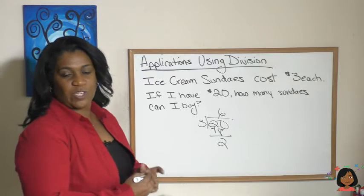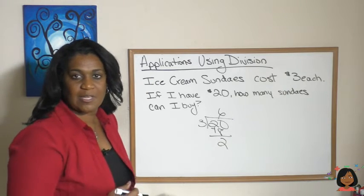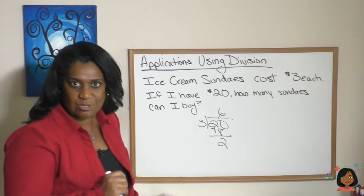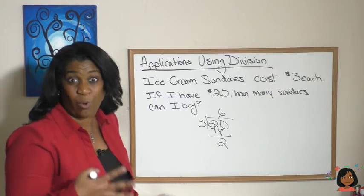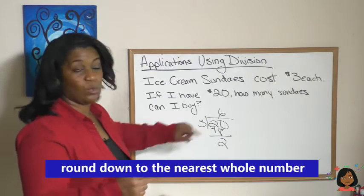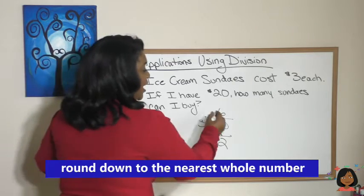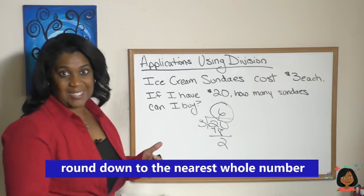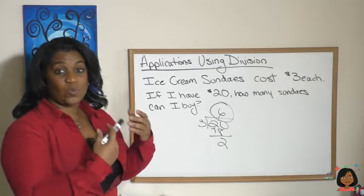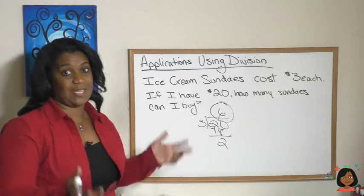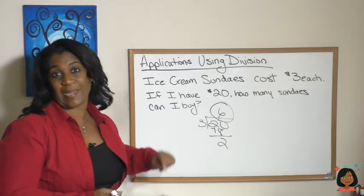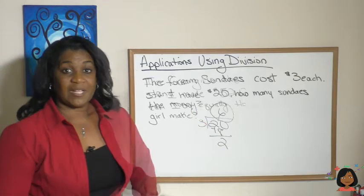Think about it — when you order an ice cream sundae, can you tell the cashier 'give me two-thirds of a sundae'? You can't do that. You need to order a whole sundae. So here we're only looking for the whole number answer, which means I can order six sundaes. In this situation, we wouldn't worry about the remainder, fraction, or decimal — we just want the whole number.